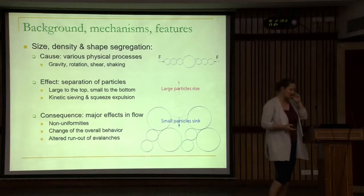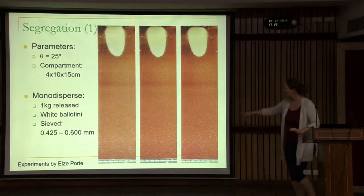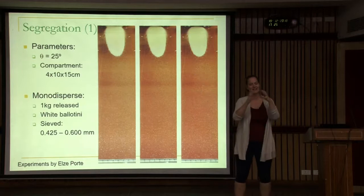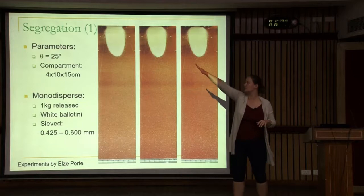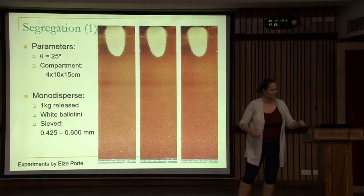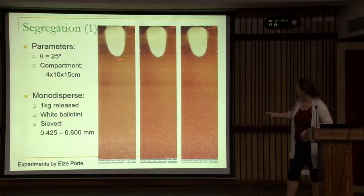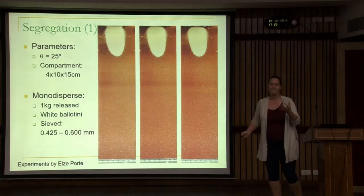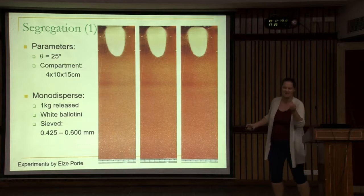This is an example done with my student Elze. We have the two-meter-long chute. We take a kilogram of particles and release them at the top so the material spreads out due to gravity and flows down. We do the experiment three times: the particles — about half a millimeter, white Bellatini glass balls — flow out to a consistent distance. The experiment is very repeatable.